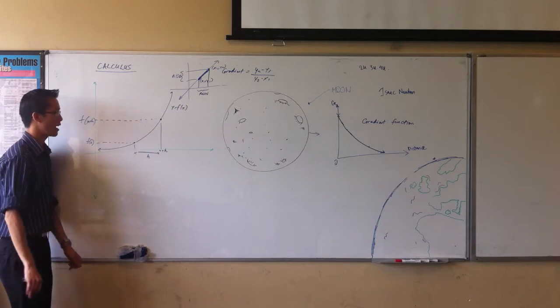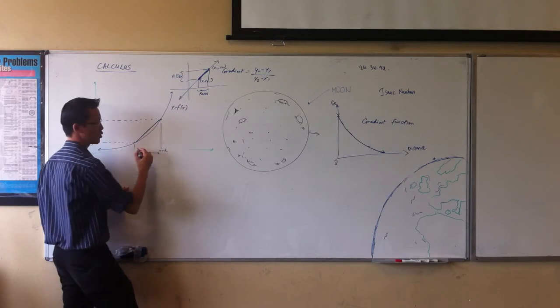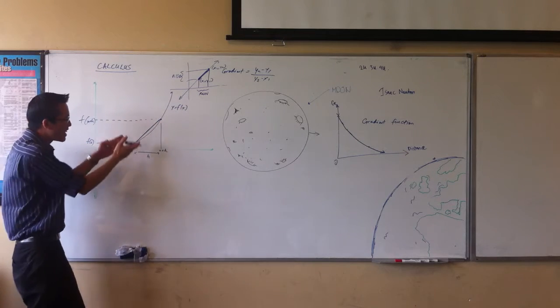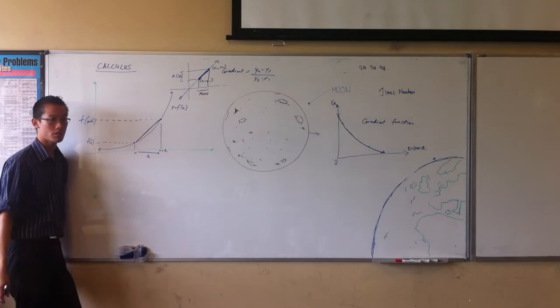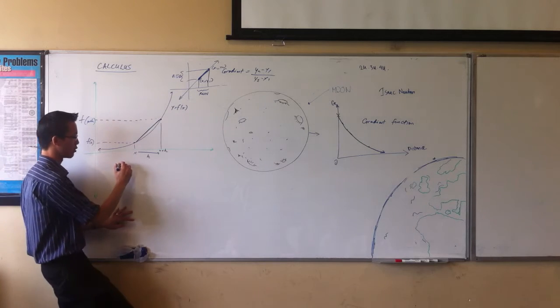So, now we can approach it in the same way as we've looked at it before. Rise over run. He said, look, if you imagine a straight line that joined these two points, you're not going to get exactly the right gradient, but we're pretty close. Like, it looks like it's about the same. At least you're in the same ballpark.